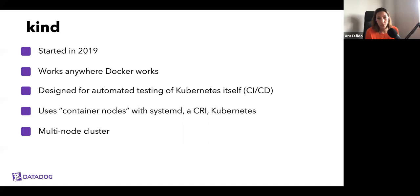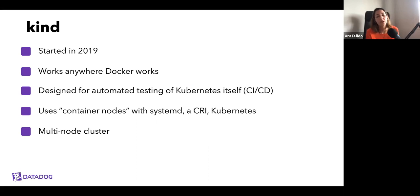Kind is a project that started in 2019, so it's fairly new. It's great because it works anywhere Docker works. It was first designed for automatic testing of Kubernetes itself — the Kubernetes project needed to spin up different clusters, turn them down, and test everything. Because Kubernetes uses it for testing, it's very good for CI pipelines as well. The nodes are going to be containers, but they use a special container image that tries to look like a VM — it has systemd, its own container runtime, and runs all Kubernetes components. It also supports multi-node clusters since they're super lightweight.